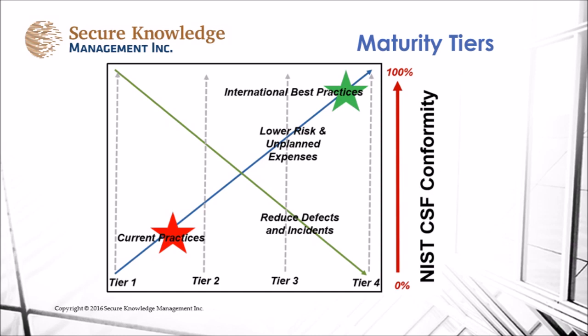Maturity tiers: Within the NIST Cybersecurity Framework there are four tiers. Each tier attempts to assess the adoption of risk management process, the integration of risk management, and external participation. Tier 1 represents not adopted. Tier 2 is approved but not rolled out. Tier 3 means risk management is approved and rolled out to the enterprise. Tier 4 is an adaptive process that takes lessons learned and implements change to make it better.